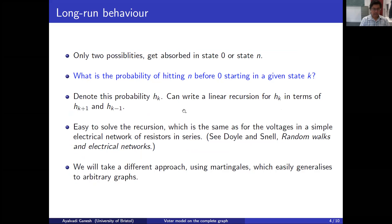Just to recall quickly, last time we described the time evolution of the voter model as a continuous time Markov chain on the state space 0, 1, up to N. And we said in the long run there are only two possibilities: either the Markov chain hits the state 0 and gets absorbed in it, or hits the state N and gets absorbed in it. All other states are transient.